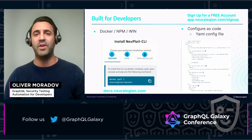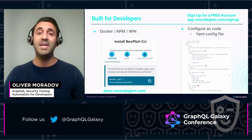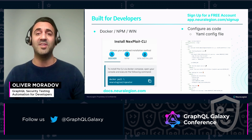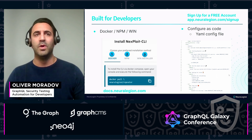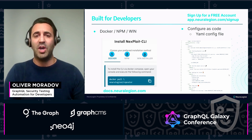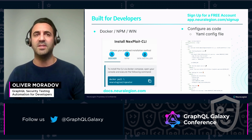If you sign up for our free account, you'll see this very nice UI, but you'll also immediately notice that you can run scans via the CLI repeater, installed via Docker Compose, NPM, or Win, and can actually configure your scans as code with global YAML configuration-based files integrated into your CI/CD.